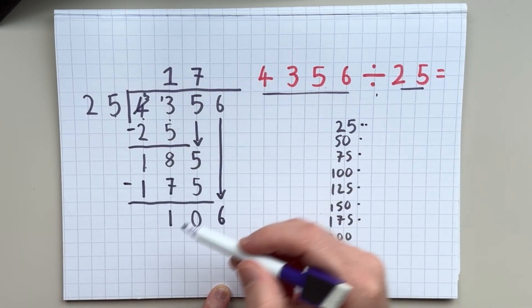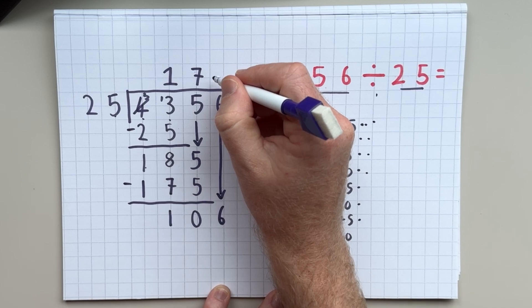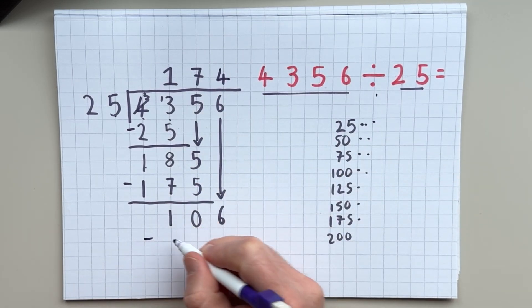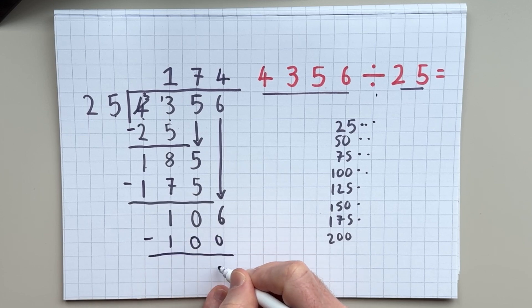How many 25s in 106? There's one, two, three, four. So I'm going to take away four 25s. And that gives me a remainder of 6.